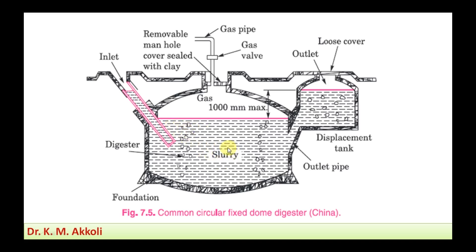The slurry formed in the digester is left for about 21 days, as it takes up to 21 days to complete digestion. During digestion, bacterial activity occurs — particularly anaerobic bacteria, which live without oxygen. These anaerobic bacteria digest the biomass and release gas, which mainly consists of methane and other gases.